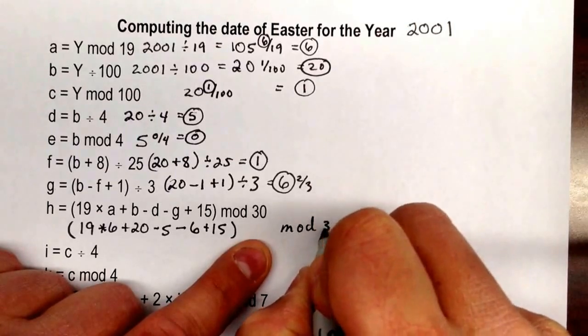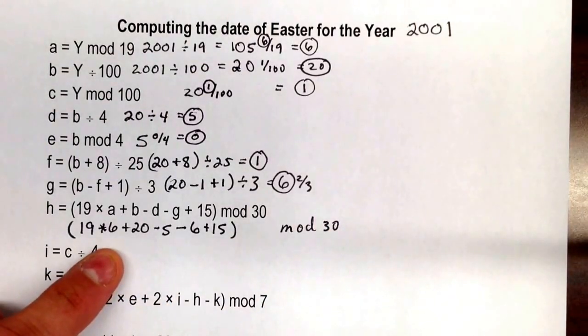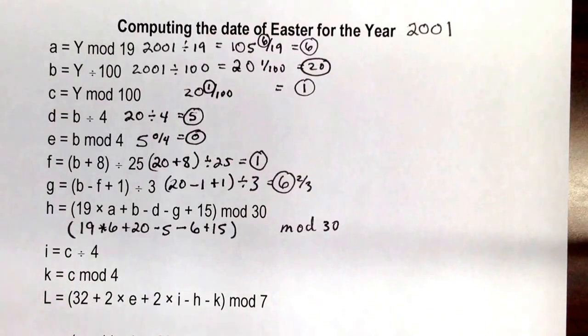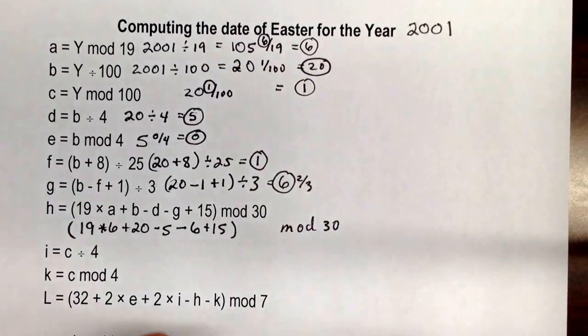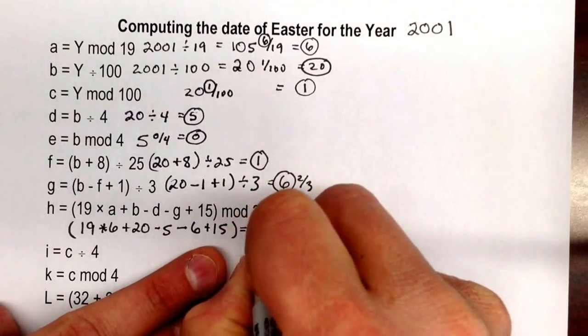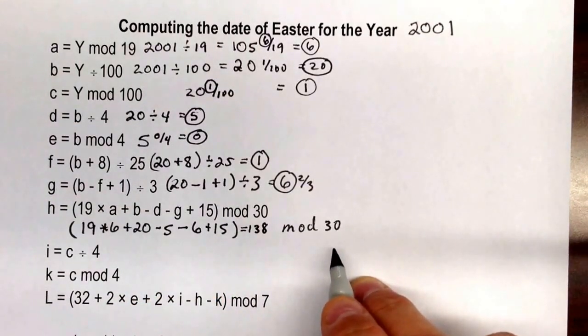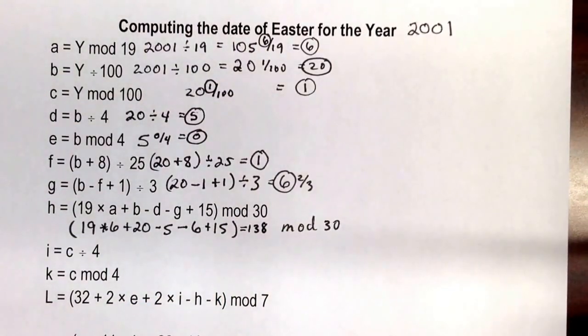So add it all together, and you get 138. Then take 138 divided by 30, and that gives you 4 and 3/5.